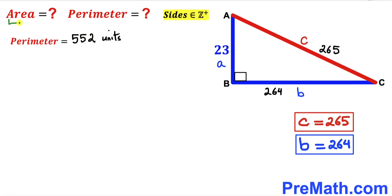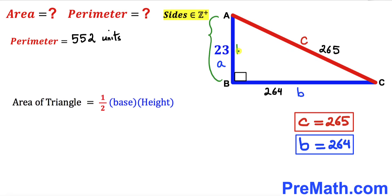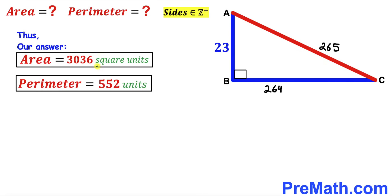Finally, let's calculate the area of triangle ABC. Recall that area equals half times base times height. The base of this triangle is 264 and the height is 23, so the area equals ½ × 264 × 23 = 3036 square units. So the area is 3036 square units and the perimeter is 552 units.